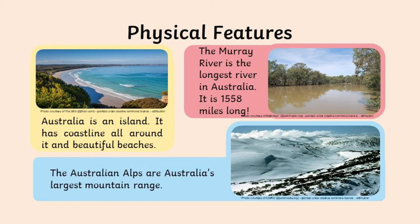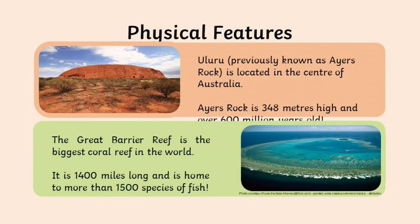Australia also has the Australian Alps, its largest mountain range. As you can see, Australia has a varied range of places — from coastlines to the Alps, to deserts and rainforests. Two very famous physical features that attract many visitors are the Great Barrier Reef, the biggest coral reef in the world said to contain more than 1,500 species of fish, and Uluru, formerly known as Ayers Rock, located in the centre of Australia.